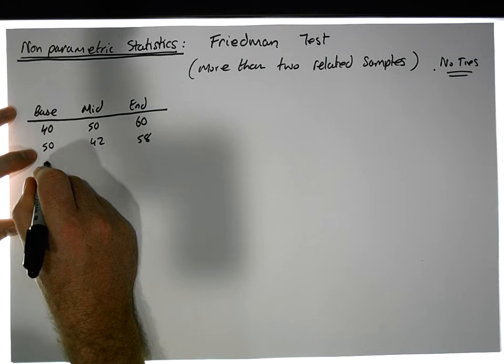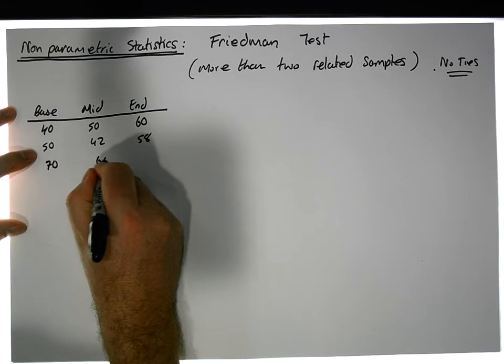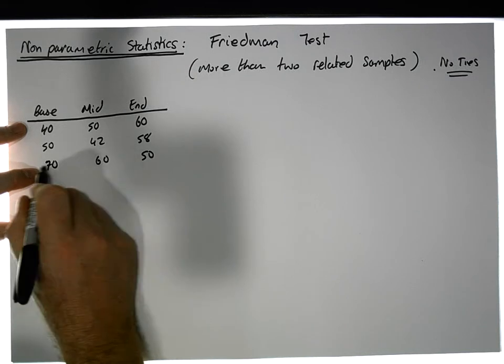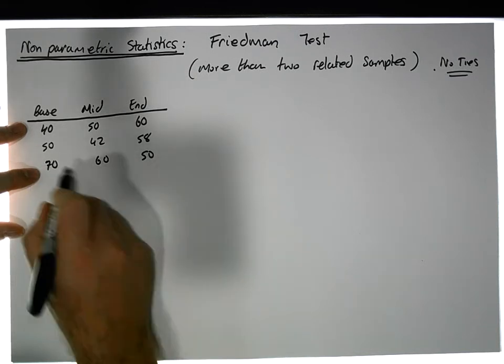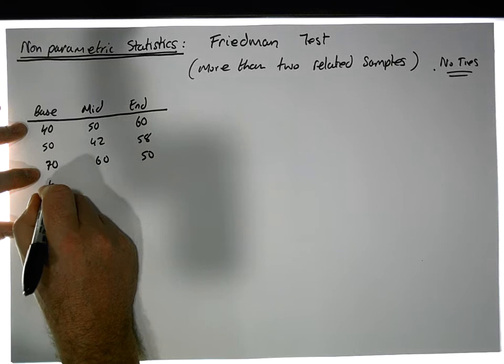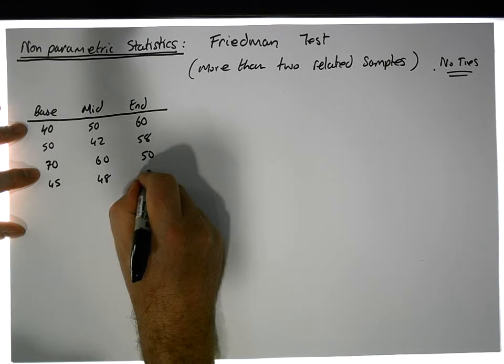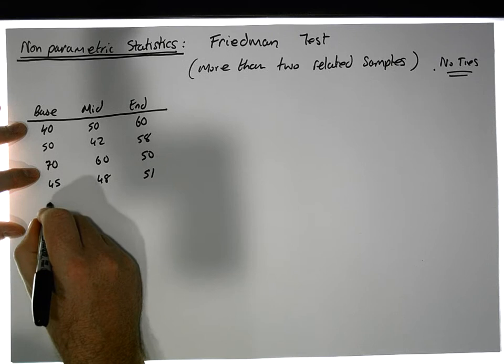Let's say we have 70, 60, and 50—so this person dropped, their scores actually dropped as they sat on this particular course. Let's say we have 45, 48, and 51.